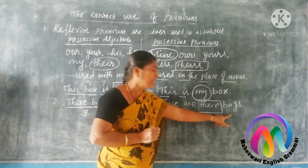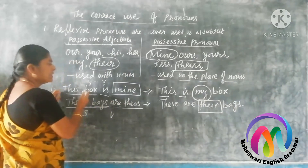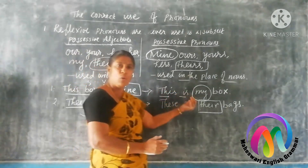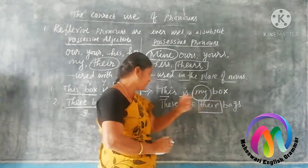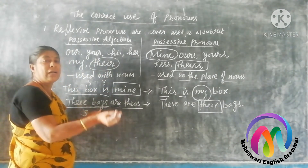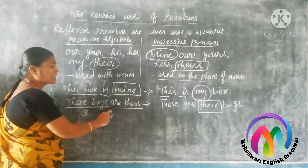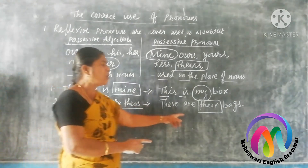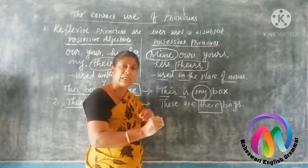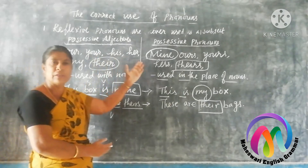So the correct forms are: 'These are their bags' and 'This box is mine' versus 'This is my box.' The meaning does not change at all — the same meaning, but the way of constructing the sentence is different according to the rule of possessive adjectives and possessive pronouns.